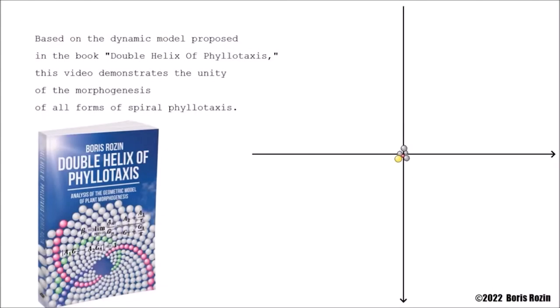Based on the dynamic model proposed in the book Double Helix of Phyllotaxis, this video demonstrates the unity of the morphogenesis of all forms of spiral phyllotaxis.